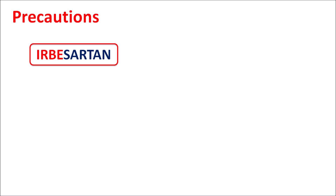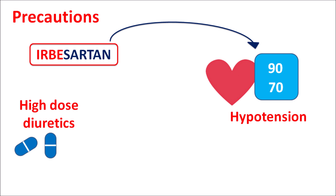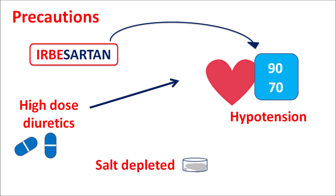Now let us discuss the precautions of Irbesartan. As Irbesartan acts as an antihypertensive agent, it can produce hypotension. This hypotension is more pronounced in patients administered high doses of diuretics such as thiazide or loop diuretics. Patients with salt depletion due to physiological conditions or other drugs can also experience hypotension. In patients with volume depletion or low salt intake, Irbesartan should be given carefully, as it can produce severe hypotension, orthostatic hypotension, and dizziness.